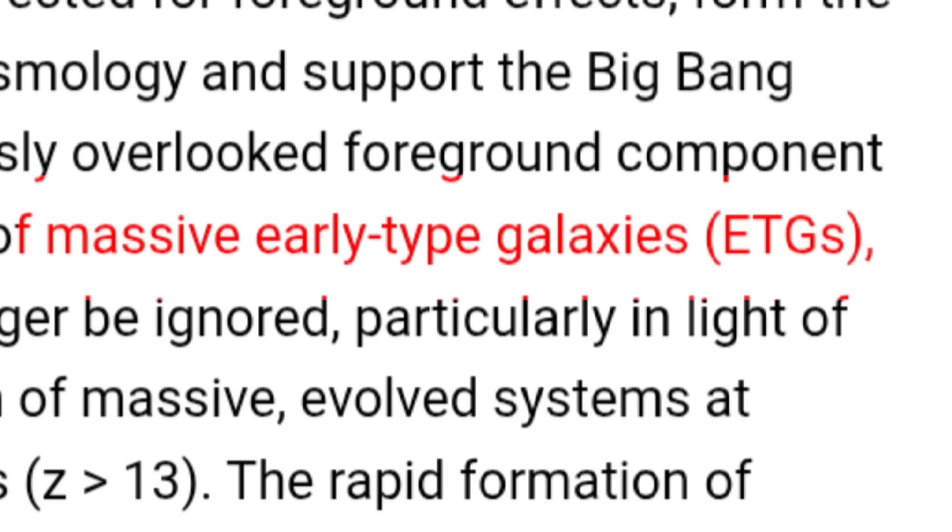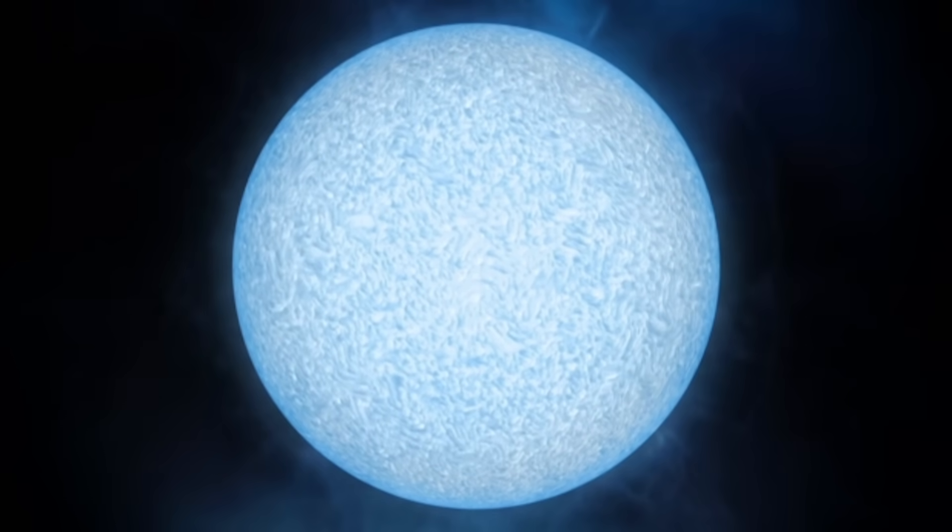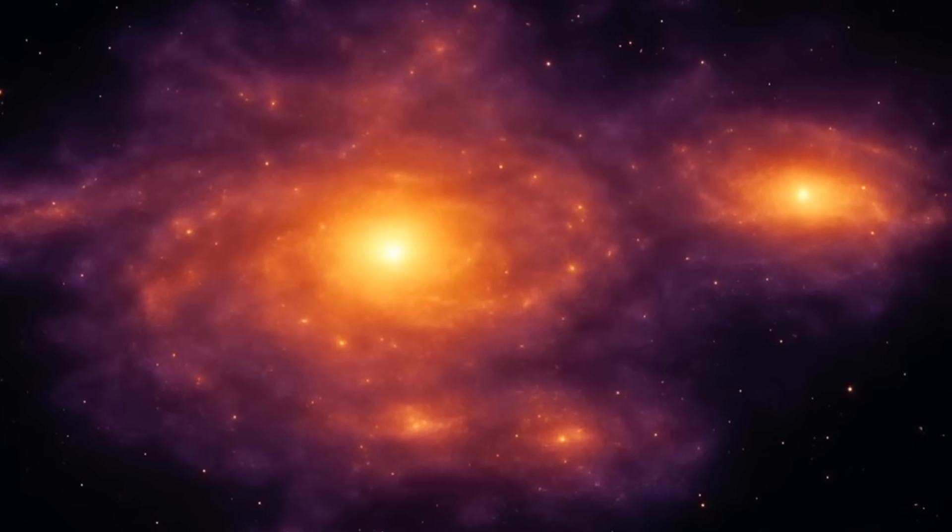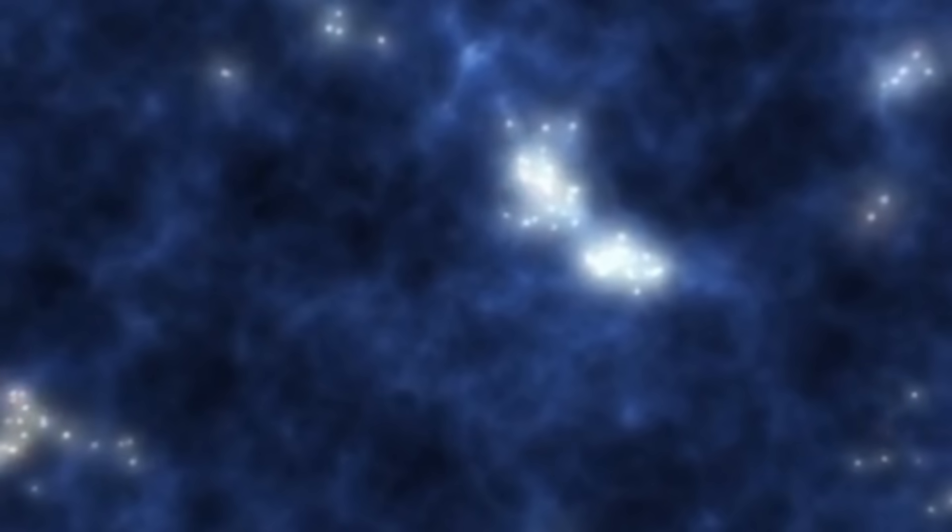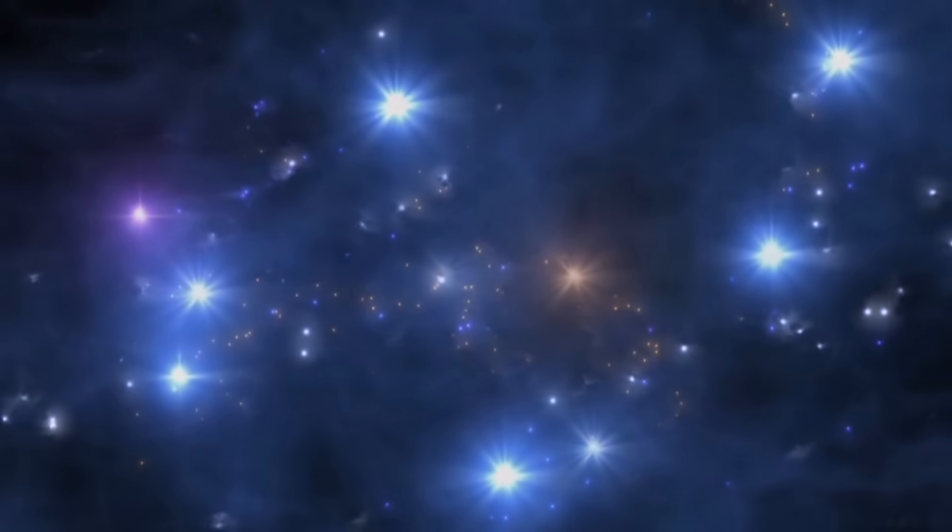In this research, scientists focus on a specific kind of galaxy called early-type galaxies. These early galaxies would have been filled with young, hot stars that produce a lot of radiation. If enough of these galaxies were packed together across the universe, their combined radiation could have filled space with a glow. And this glow, over billions of years, could become red-shifted, stretched out by the expansion of the universe, until it looks exactly like the CMB we see today.